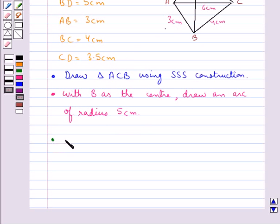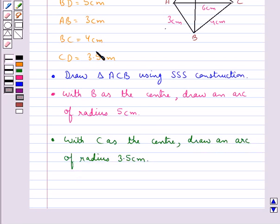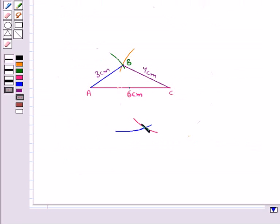Then in the next step with C as the center, we draw an arc of radius 3.5 cm. So the point D lies on both these arcs. It is the point of intersection of these arcs. Let this be point D.